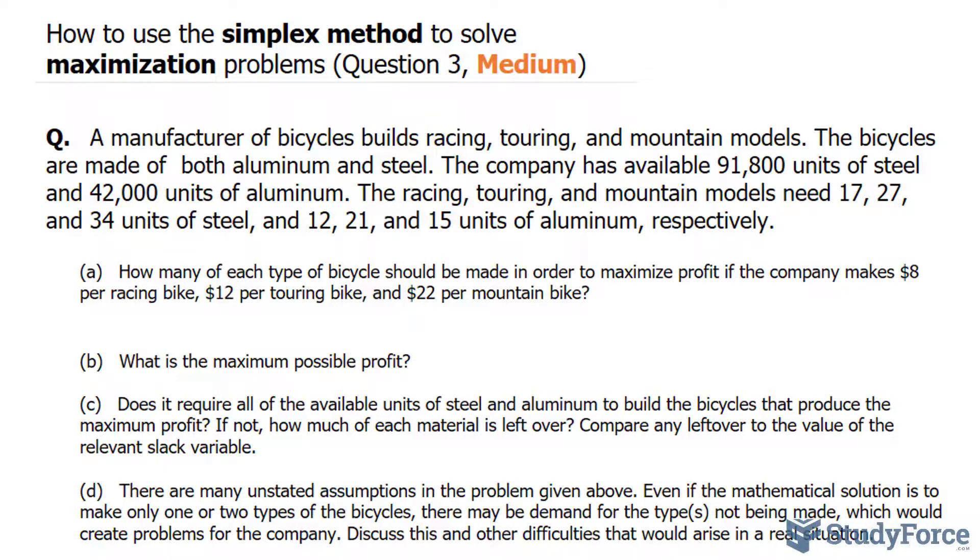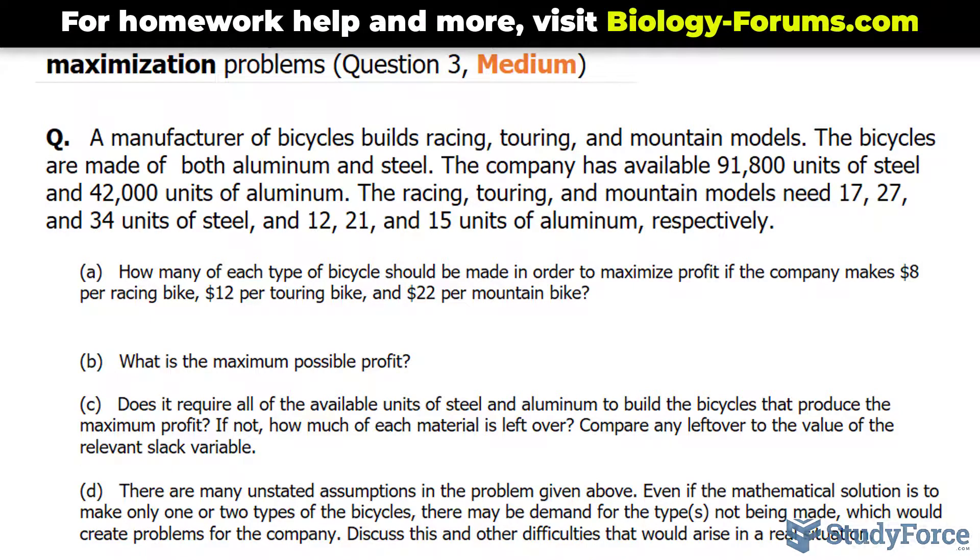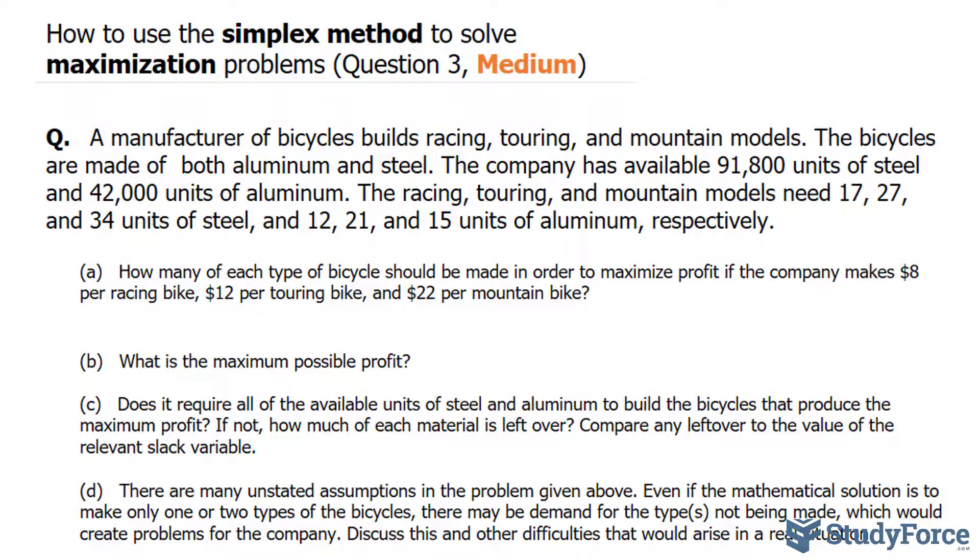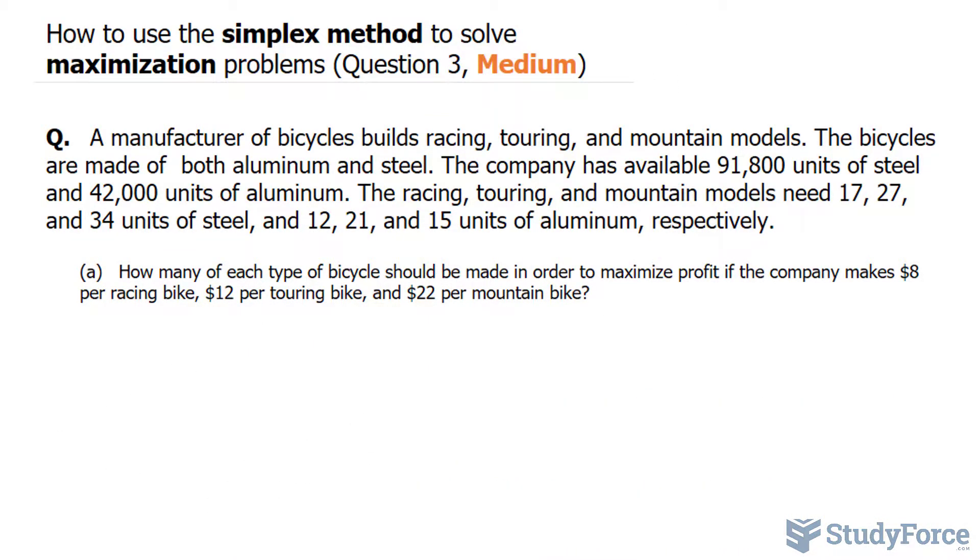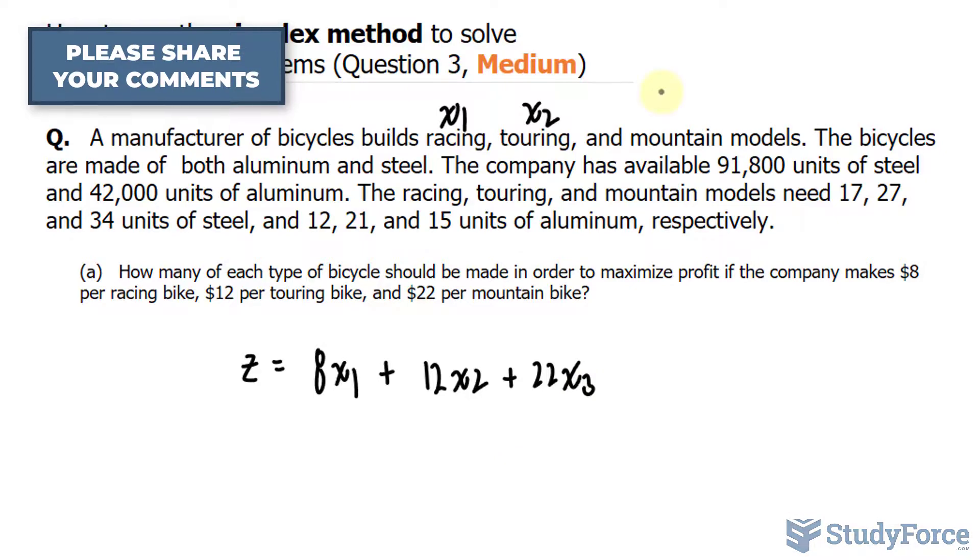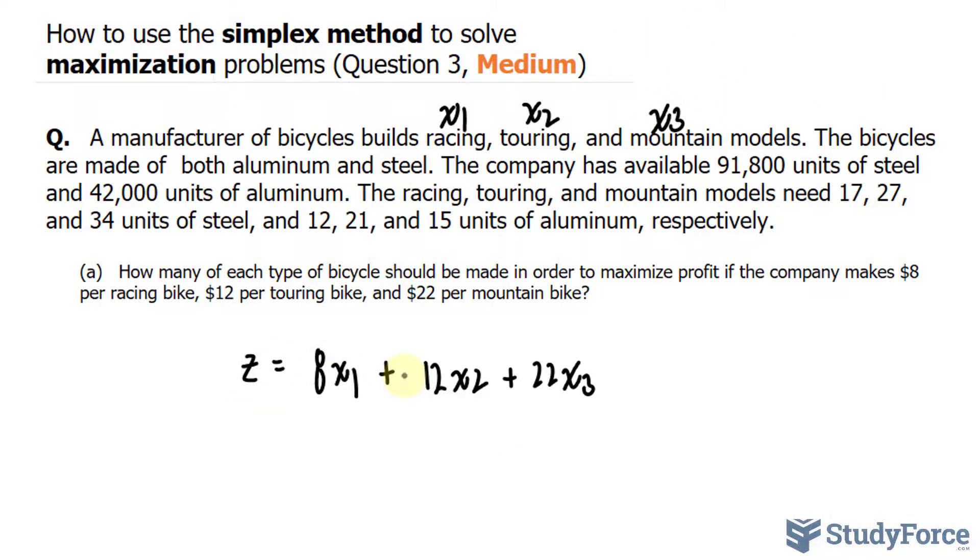The first thing we have to answer is how many of each type of bicycle should be made in order to maximize profit if the company makes $8 per racing bike, $12 per touring bike, and $22 per mountain bike. Now unlike in questions one and two, we are not given the objective function here. In fact, we're not even given the constraints. So we have to build those inequalities and that equation from scratch. Now using the information provided in question A, we can come up with the objective function. We'll say that Z is the optimal or maximum profit that the company will make. And that is equal to 8 times X sub 1, which I'll represent as my racing bike, plus 12X sub 2, which we'll represent as the touring bike, plus 22X sub 3, which will account for the mountain models.